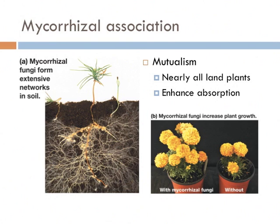This mutualistic association provides the fungus with relatively constant and direct access to carbohydrates, such as glucose and sucrose. The carbohydrates are translocated from their source, usually leaves, to root tissue, and onto the plant's fungal partners. In return, the plant gains the benefits of the mycelium's higher absorptive capacity for water and mineral nutrients due to a comparatively large surface area of fungus, thus improving the plant's mineral absorptive capabilities.